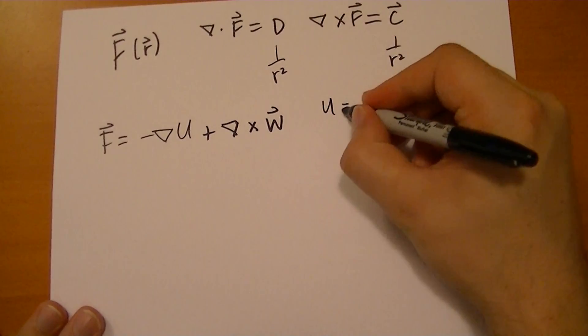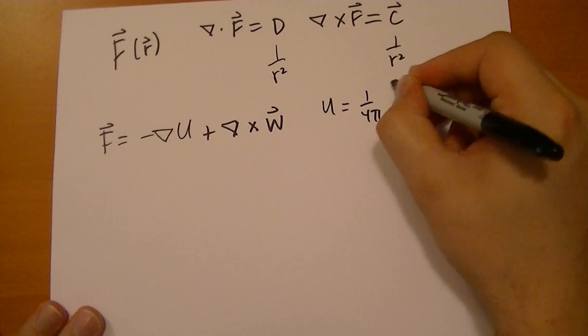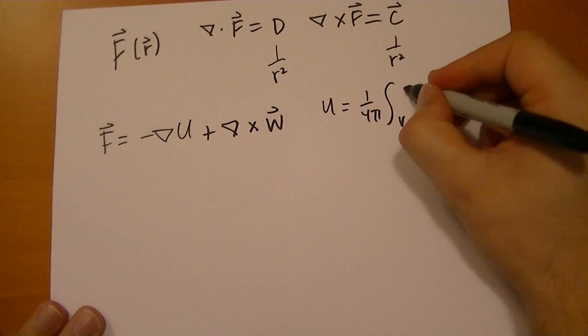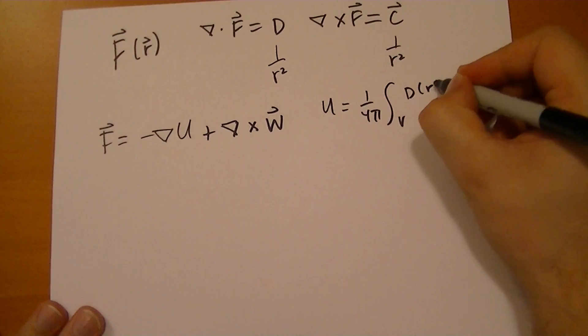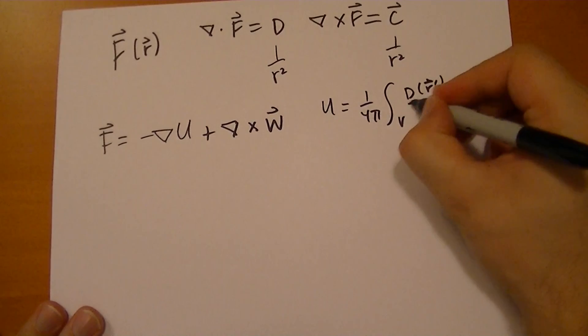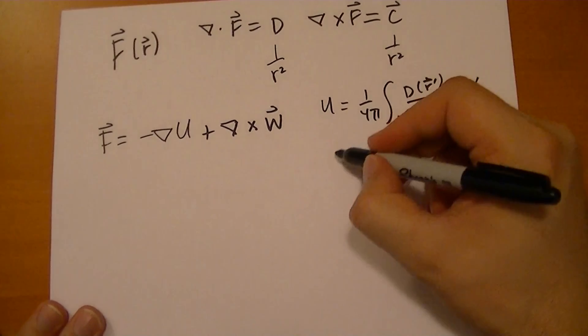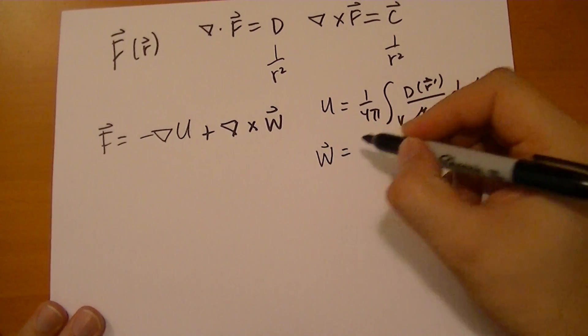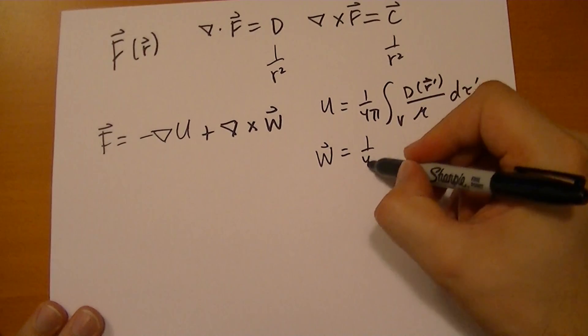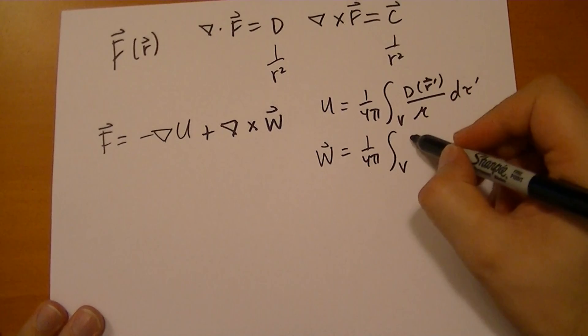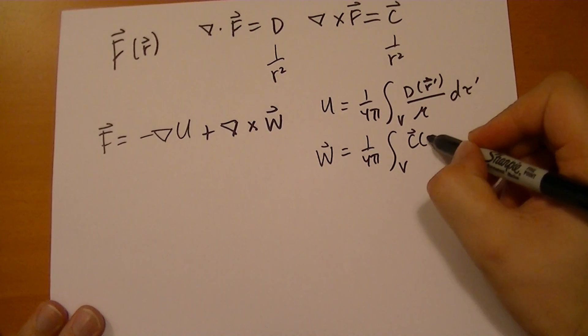Where U is 1 over 4 pi integral over all space of the divergence that we've just given, R prime vector, all over R d tau prime. And W vector is given by 1 over 4 pi integral over all space of the curl you were given.